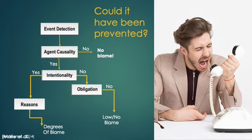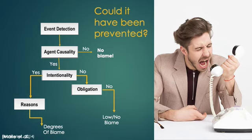Intentional causation of a norm-violating event that is not backed up by good reasons — that's how you get a lot of blame. If an agent is judged to have brought about the event unintentionally — it was an accident — the perceiver then considers whether the agent had an obligation to prevent that norm-violating event. If not, low or no blame is allocated.